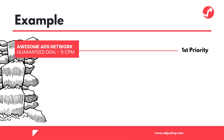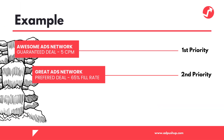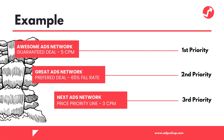Here's an example of how backfilling with different ad networks works. Let's say we are working with Awesome Ad Network — we negotiated a guaranteed deal with them at a $5 CPM. Likewise, we are also working with Great Ads Network, which has a preferred deal with a 65% fill rate. And also, we are running with Next Ads Network using a price priority line with a $3 CPM.